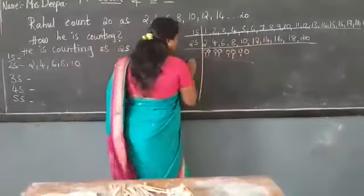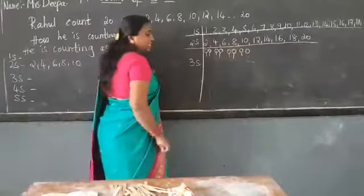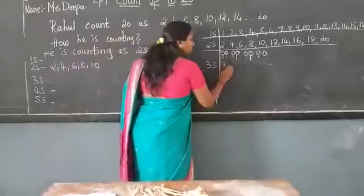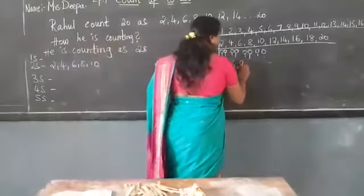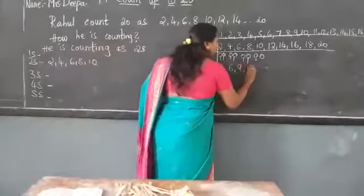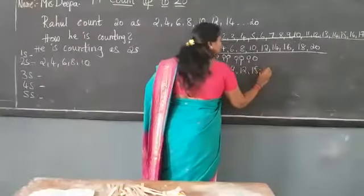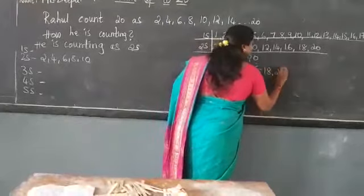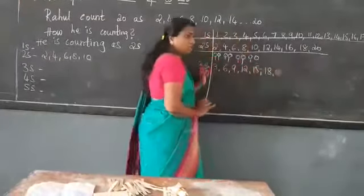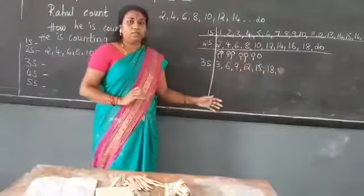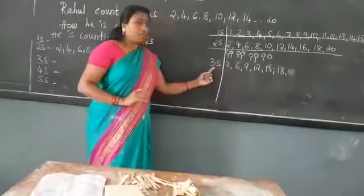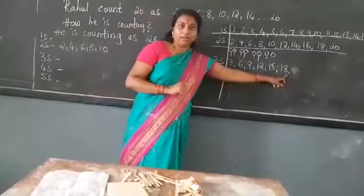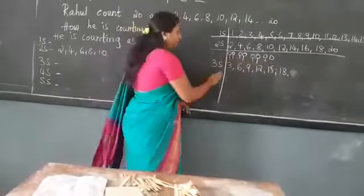Again we go for 3s. The same thing we go for 3s. 3s also. 3, 6, 9, 12, 15, 18, 20, 18. I am sorry for that. Till 18. So 3s we are counting till 18. Why till 18?